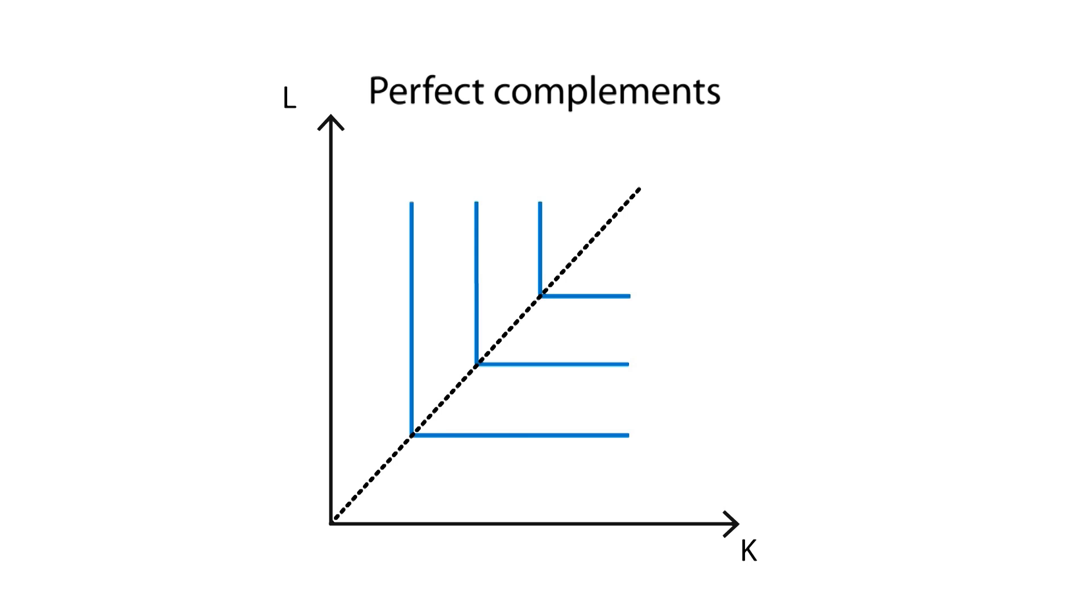The best example of complementary inputs are shovels and diggers, since the amount of holes will not increase when there are extra shovels without diggers.